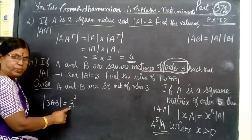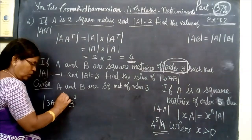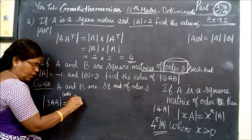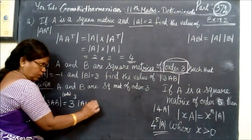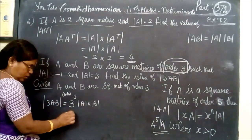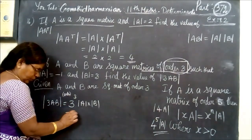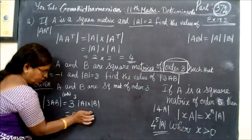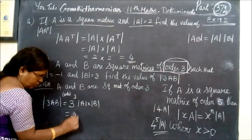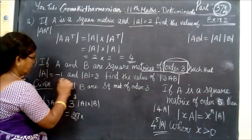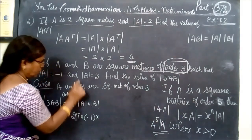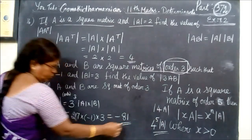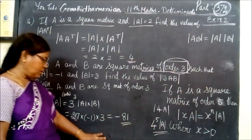This is the question. This is the order. Determinant of AB equals determinant A into determinant B. Determinant B is equal to minus 81. So, this is the answer.